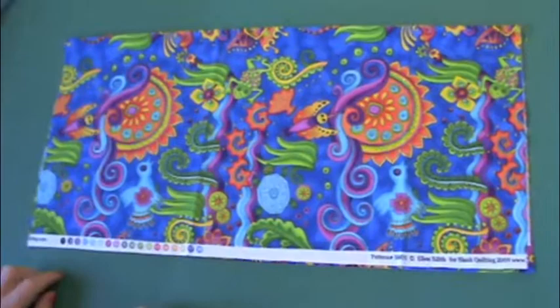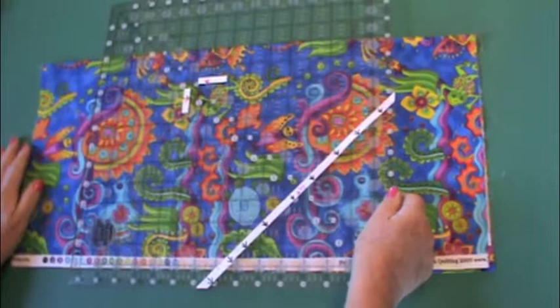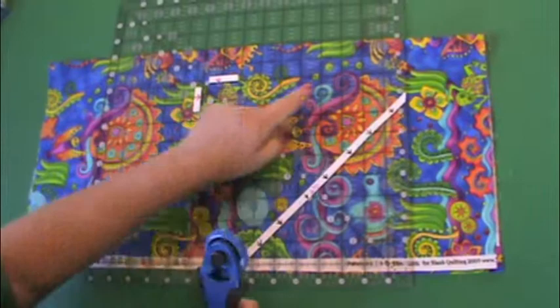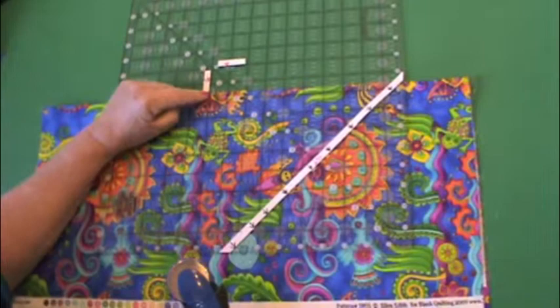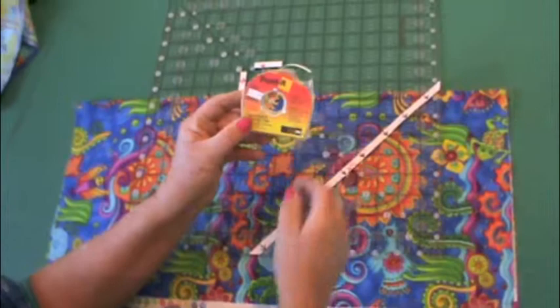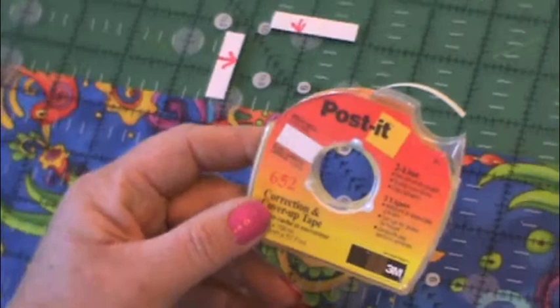So here's your focus fabric from the kit and I'm going to grab a ruler. Now I'm a person who has difficulty remembering measurements and so what I found easiest to do is to measure out the 10 inches on my ruler and mark it with tape. You can use post-it tape or you can use masking tape, any kind of tape.